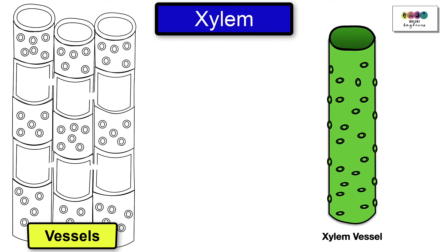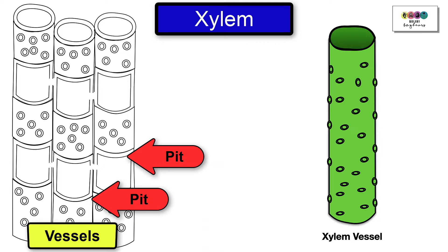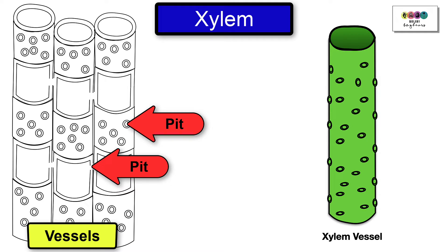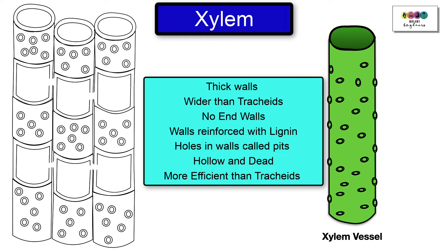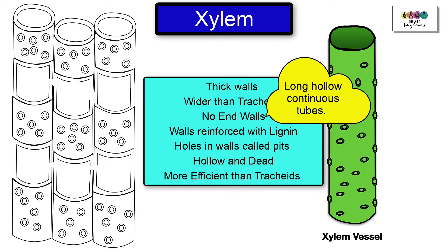So let's take a look at the other type of xylem cell, the xylem vessels. You'll notice from the picture that those pits are visible, so they're in both the tracheids and the vessels. What can we say about the xylem vessels? Well, first of all, you'll immediately notice from the diagram that they're wider than the tracheids and not pointy. They have thick walls, they're wider than tracheids, and there are no end walls, which is why they form long hollow continuous tubes.